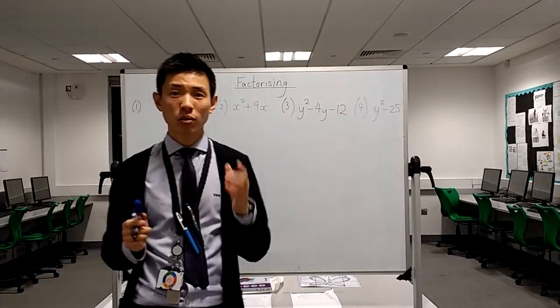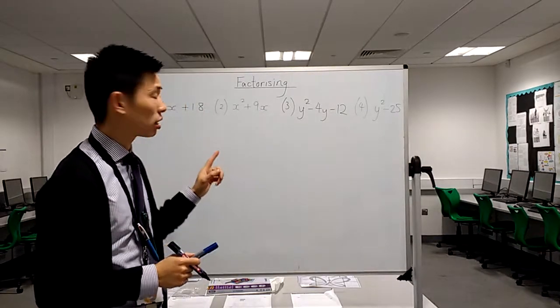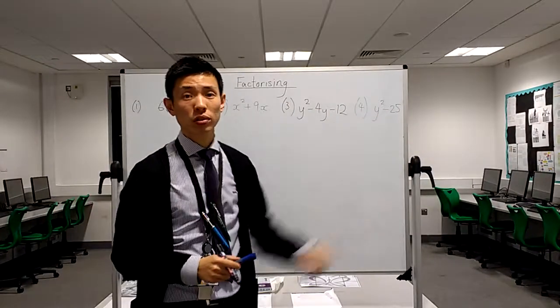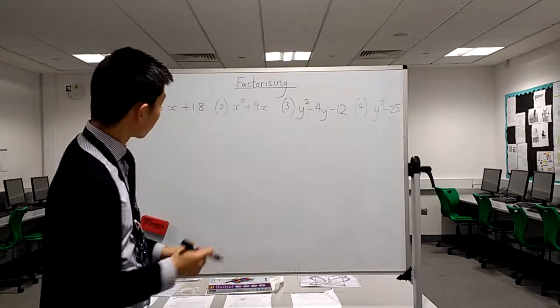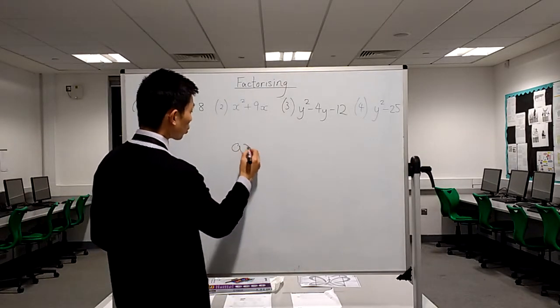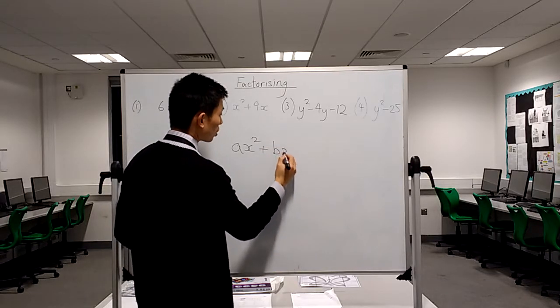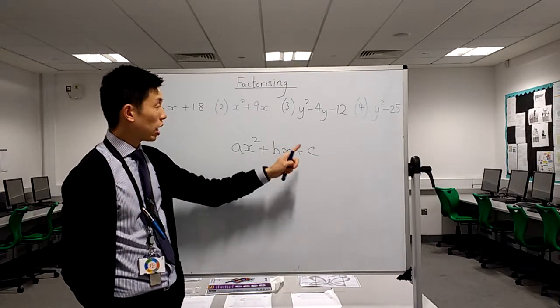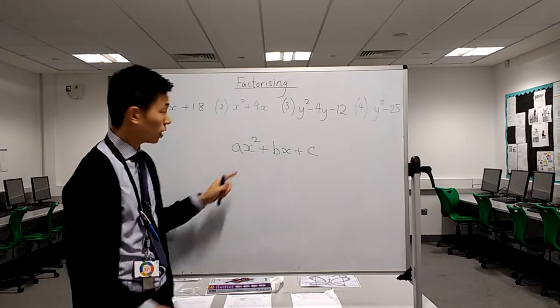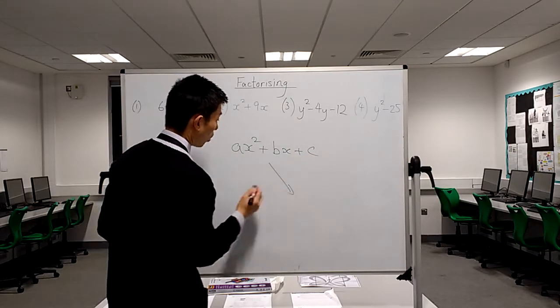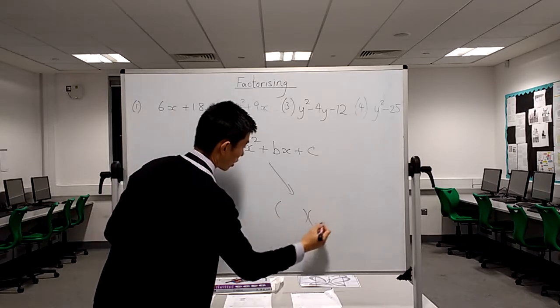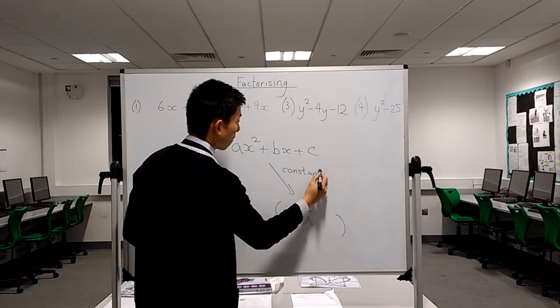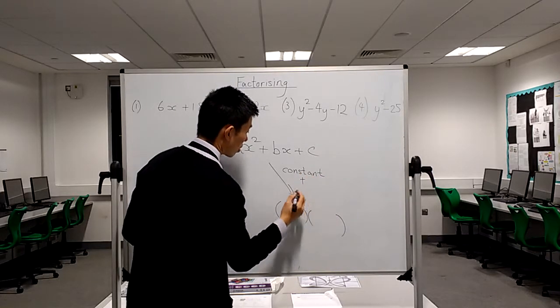The first thing to consider when factorising is how many brackets are needed for these expressions. There's a rule. You must make sure the expression has a constant. If it has a constant and it's quadratic, it's always double bracket. So, constant plus quadratic equals double bracket.